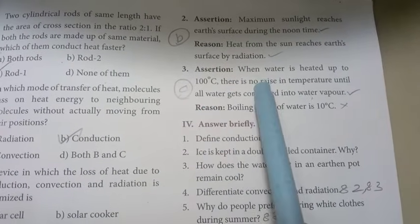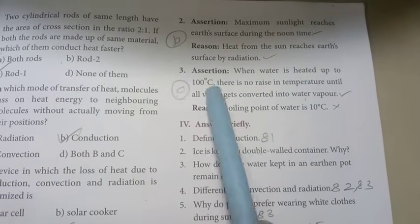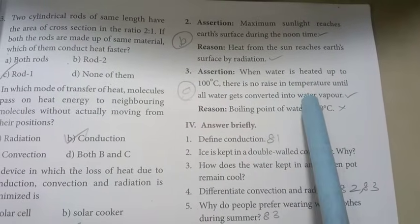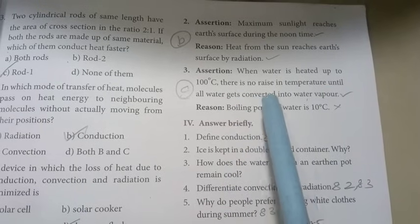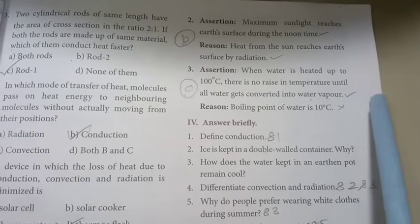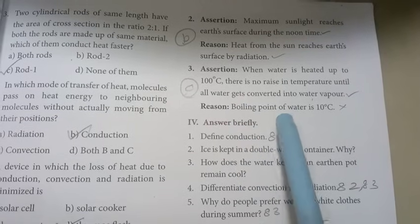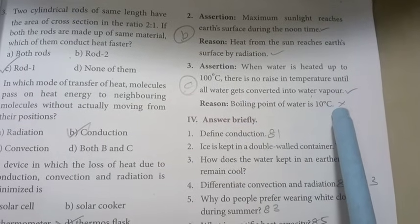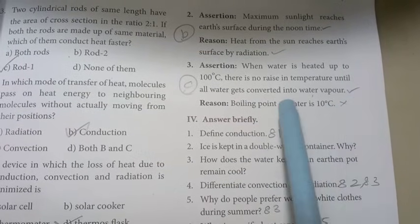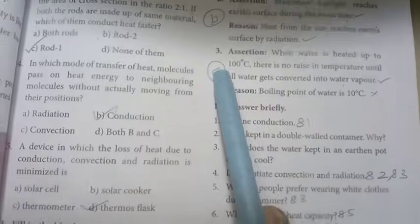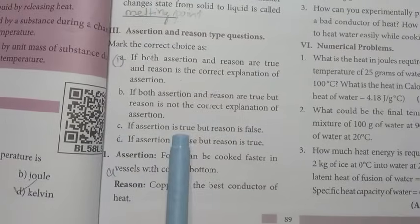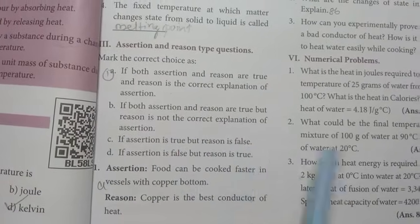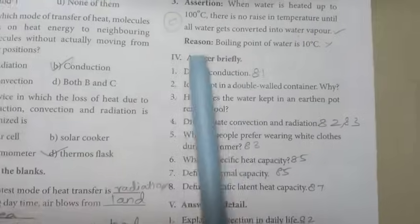Third one: When water is heated up to 100 degree Celsius, there is no raise in temperature until all water gets converted into water vapour. Assertion statement one is correct. Boiling point of water is 10 degree Celsius. So, the statement one is wrong. C option is the right answer. Third one, if assertion is true but reason one is false.